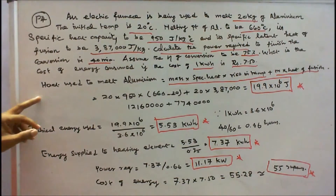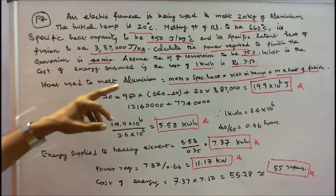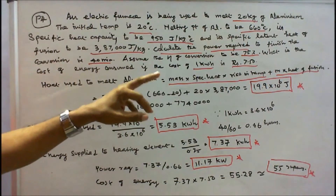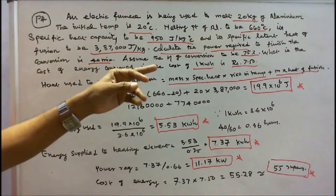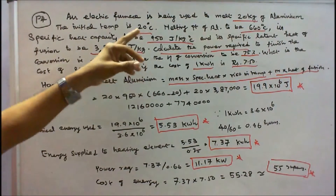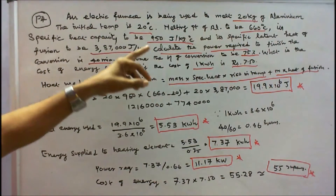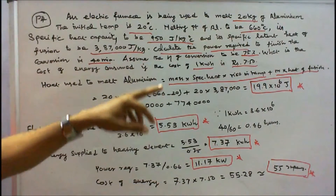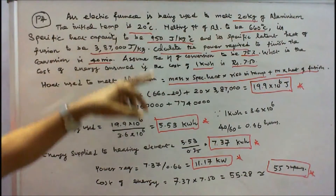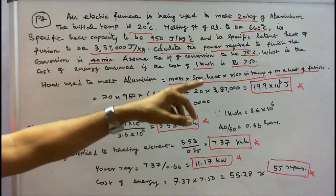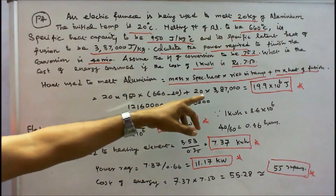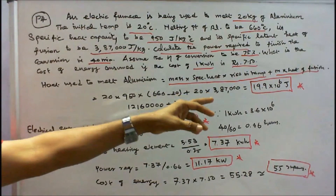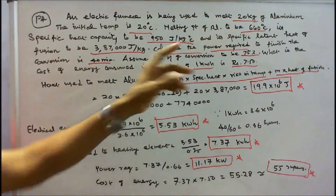Heat used to melt aluminium equals mass into specific heat capacity into rise in temperature, plus mass into heat of fusion. That is 20 into 950 into (660 minus 20), plus 20 into 387,000. That is equal to 19.9 into 10⁶ joules.